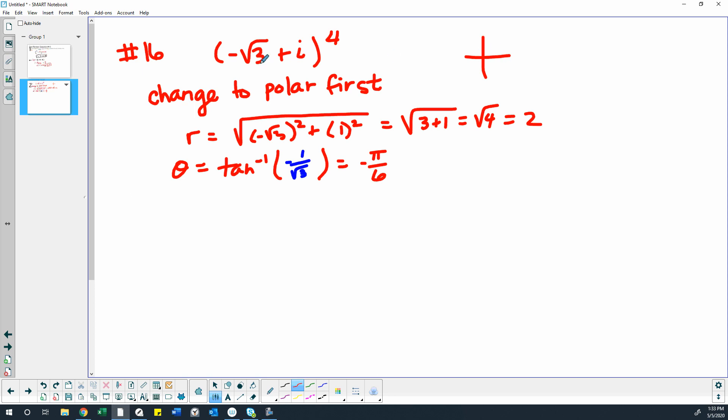So this is left and up. So quadrant 2 would mean that it's not negative pi over 6. So yes, q2 is 5 pi 6. Good.